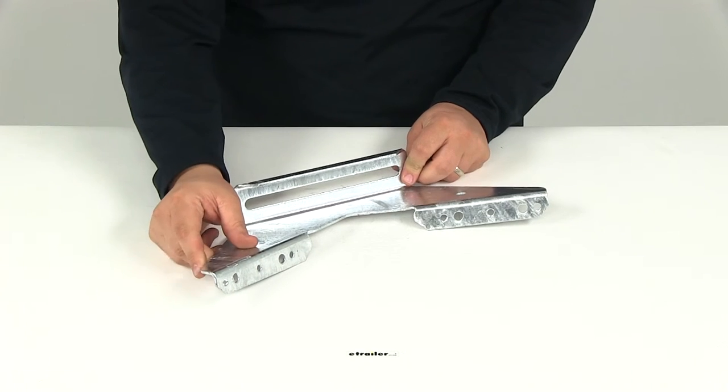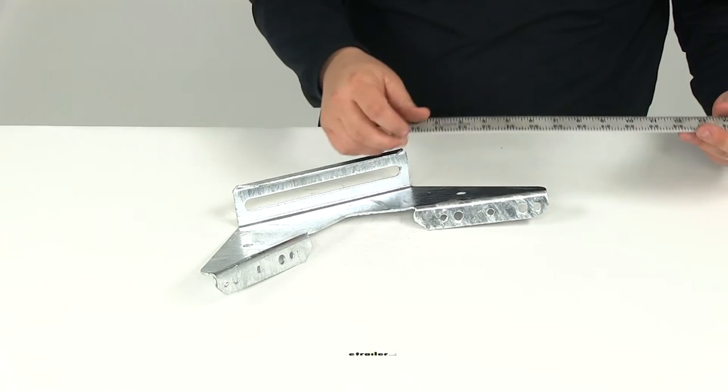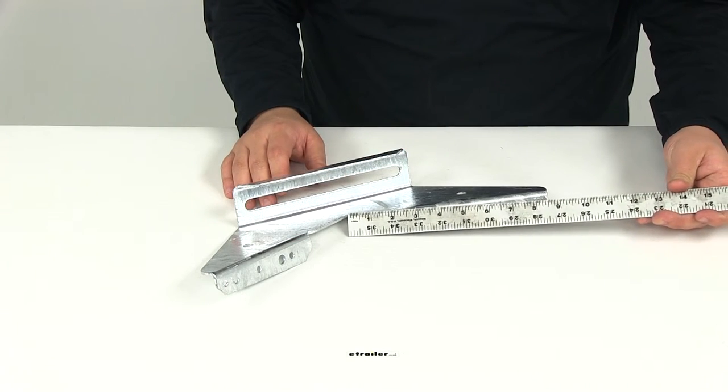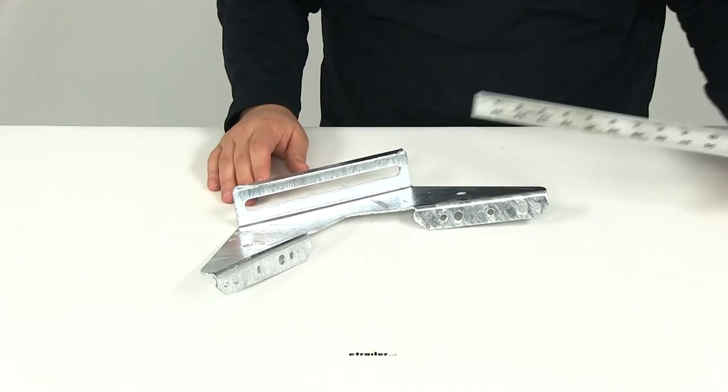Let's take a measurement of the arm length, measuring from the bottom of the V to the end of the arm. That gives us a measurement of about eight and a half inches. The other side is identical.